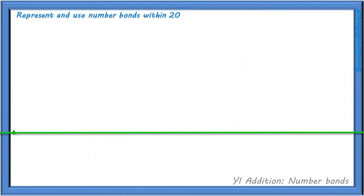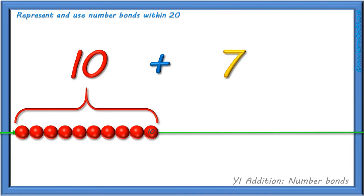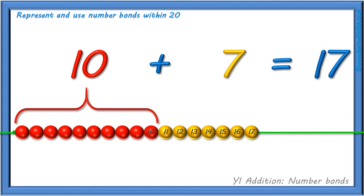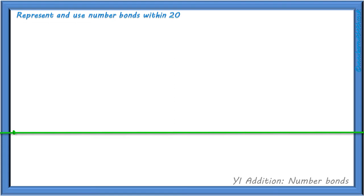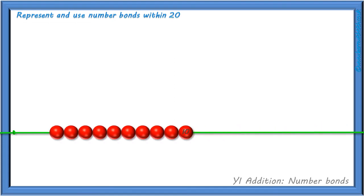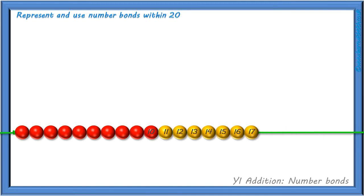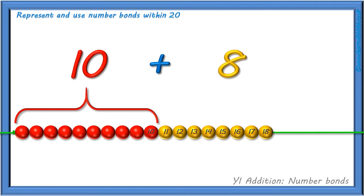And if we show 17 on our bead string, we start with 10 red beads and add 7 yellow beads to show 17 beads altogether. If we show 18 on our bead string, how can we write it as a calculation? Well, we start with 10 red beads and add 8 yellow beads, which equals 18 beads altogether.